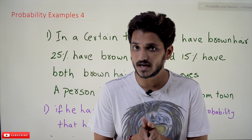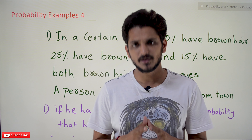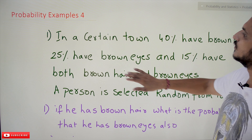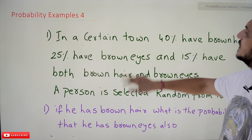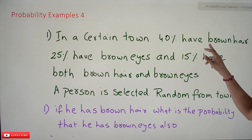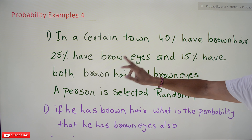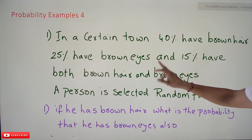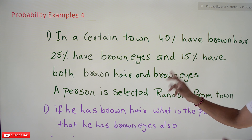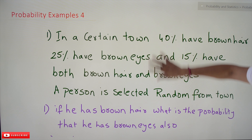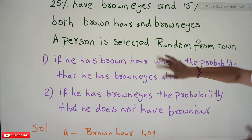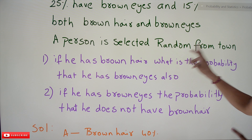Coming to today's class, our first question is: in a certain town, 40% have brown hair, 25% have brown eyes, and 15% have both brown hair and brown eyes. This is the data given in the question.